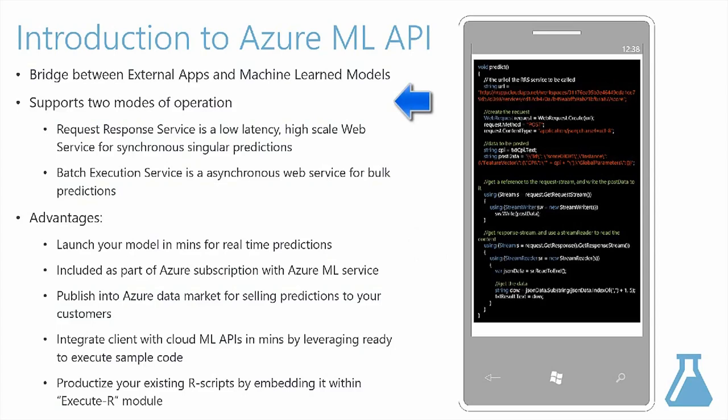This Azure ML API service operates in two modes: a low-latency request-response service for quick prediction on a single row of data, and an asynchronous batch execution service for doing bulk predictions on a batch of data.